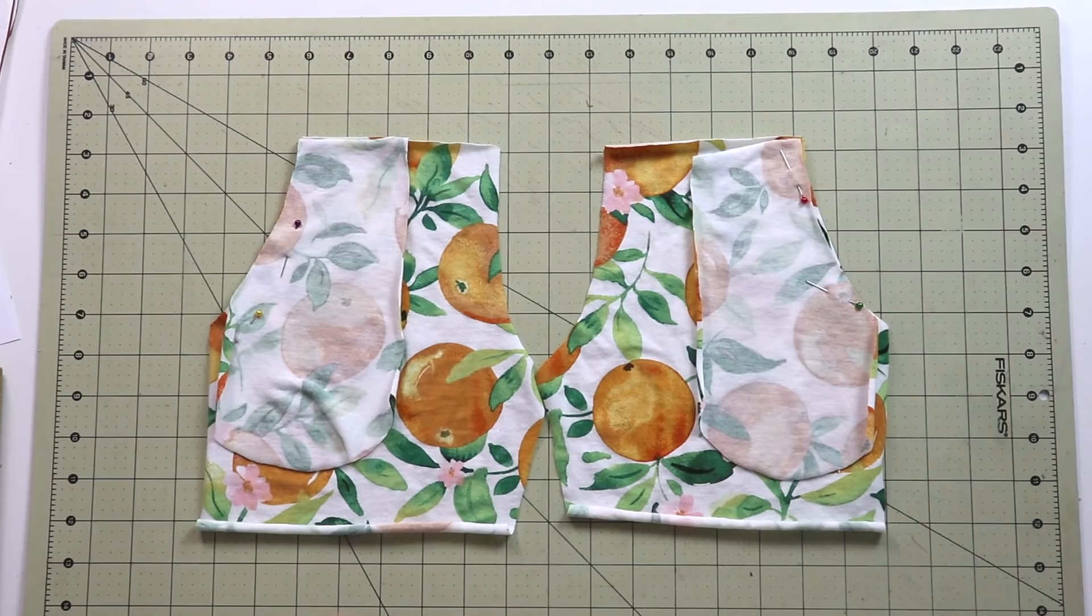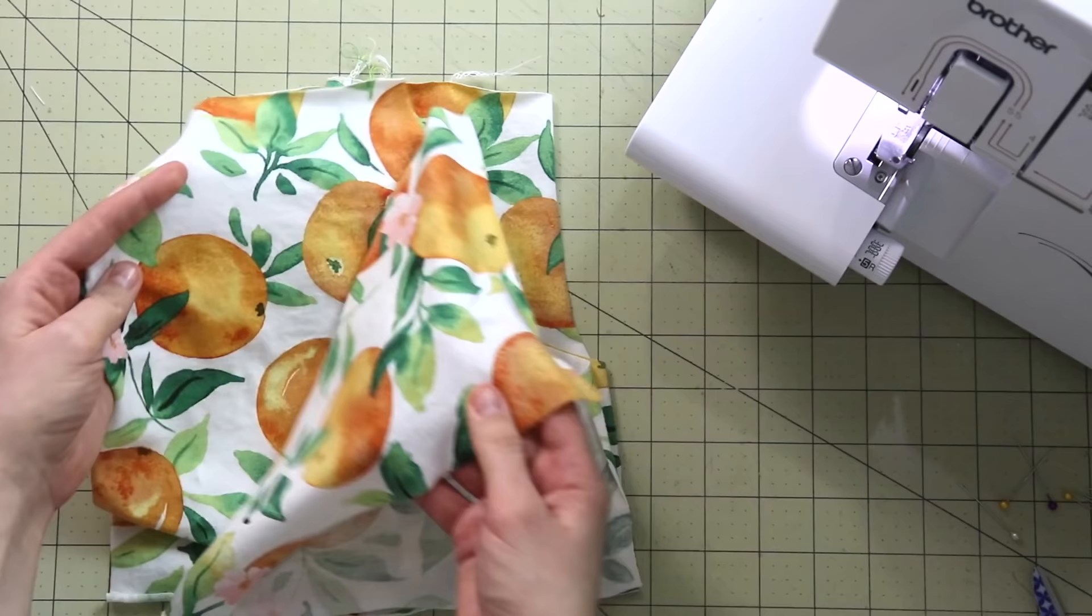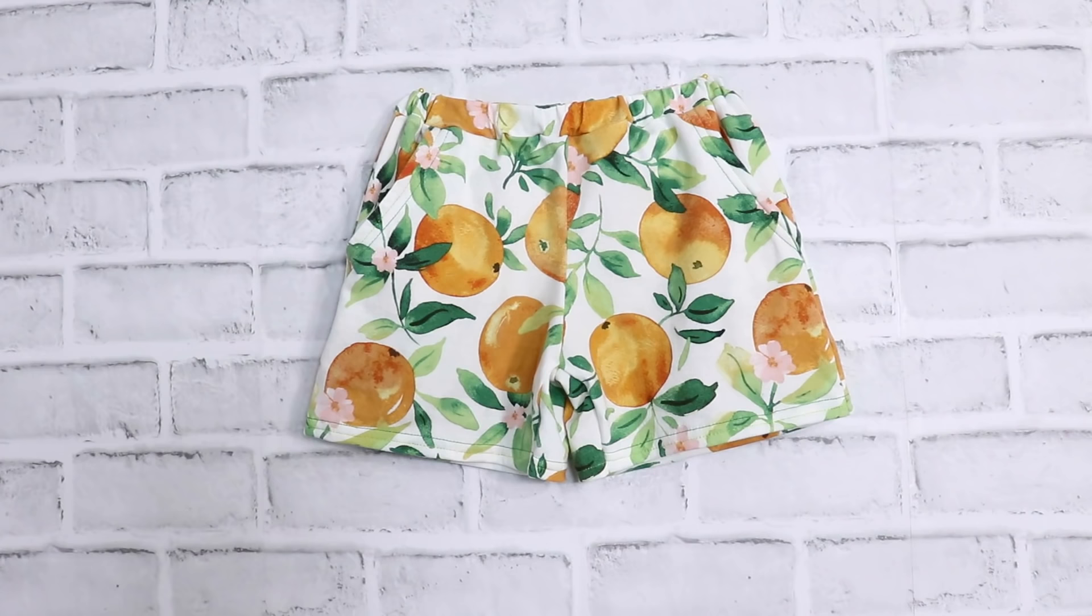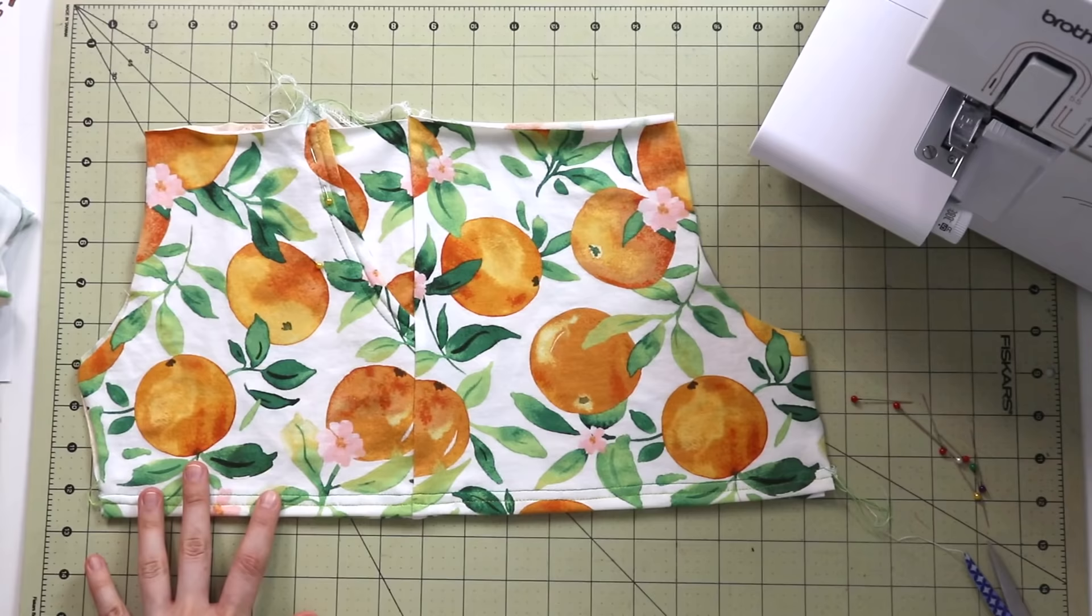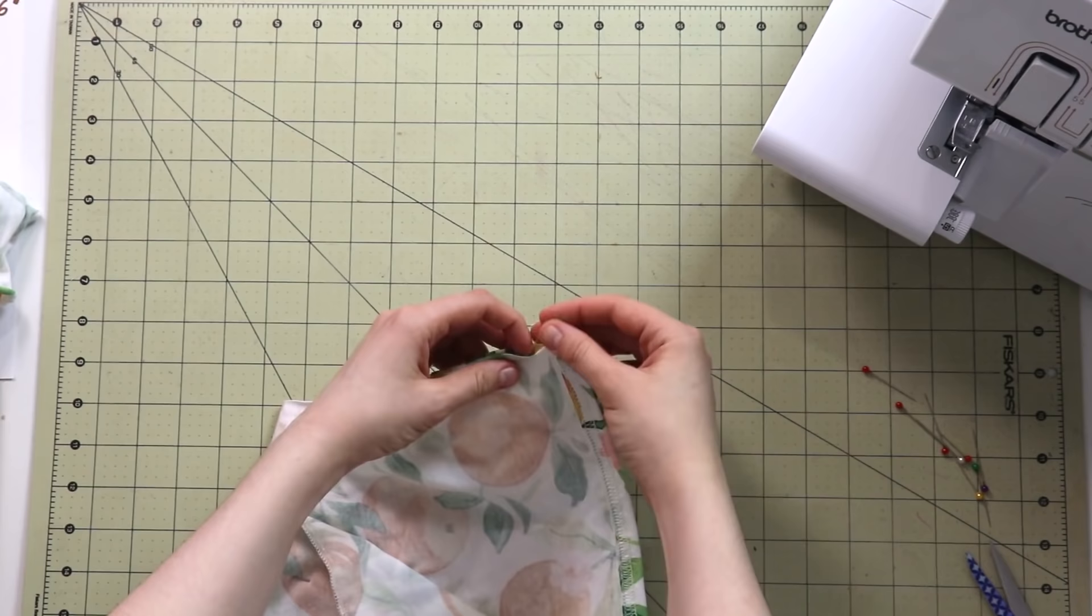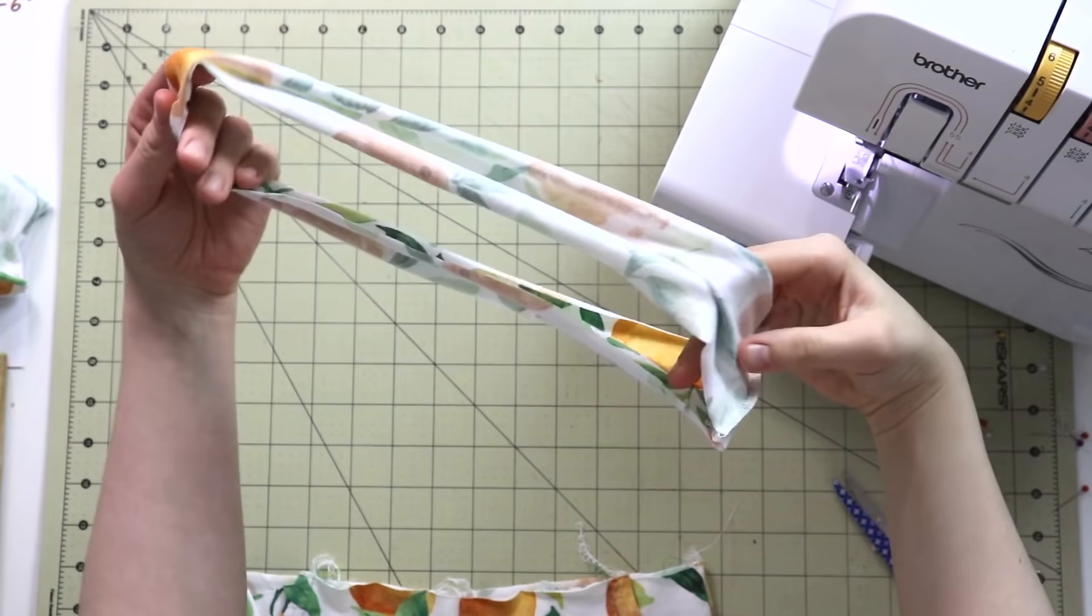So first, if you're making pockets, finish the pockets first. Then I move on to the side seams. We're placing the right side to right side, front to back, and we're sewing the side seams. After the side seam, I go ahead and finish the hem. But if you'd like, you can also leave it as the very last thing to do. I just find that on smaller garments like this one, it's easier to do the hem first than last. Then we need to sew the crotch and join the two pant legs together. The last thing for me is to add the waistband with the elastic.